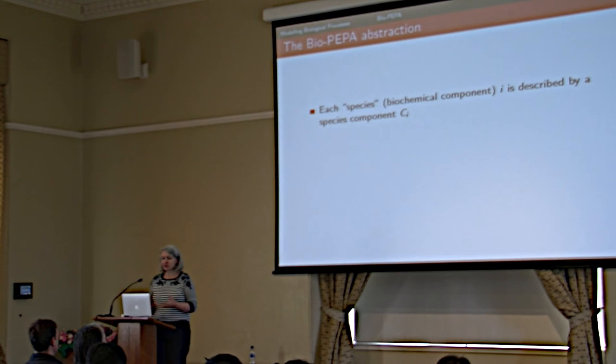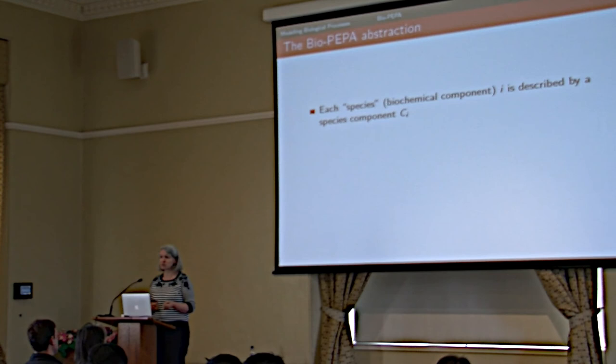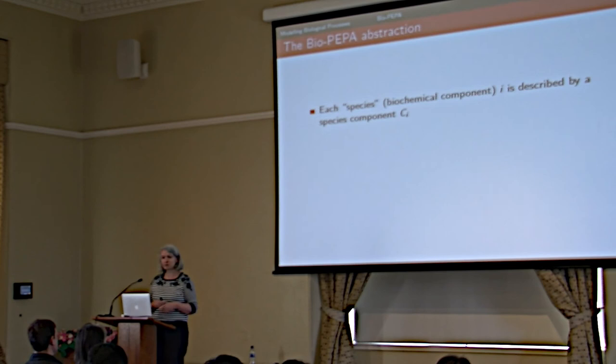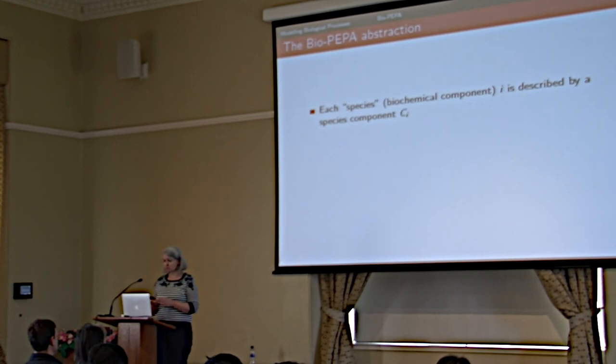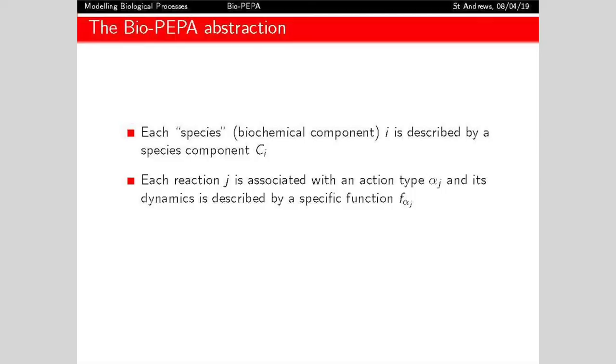The basic unit of a component in BioPEPA is called a species — the biological term for any kind of molecule. Typically this would be some kind of protein, such as a protein called SRC. It might be RNA encoding the SRC, or it might be DNA. Anything that is an entity within the biochemistry they call a species, and these are our components in BioPEPA.